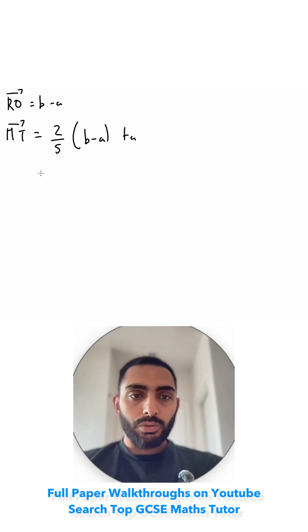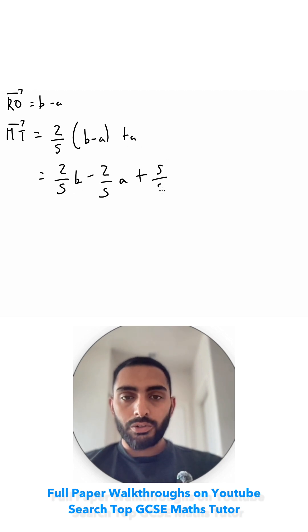I'll expand this bracket out. So I've got 2 fifths B minus 2 fifths A plus A. Because all of these are in fifths, one whole is the same as 5 fifths. So I'm going to write it as 5 fifths A to make it easier to add later.